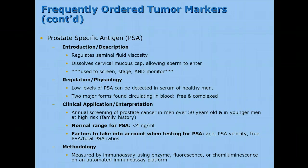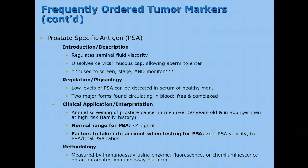Again, we use immunoassay for HCG. Next is PSA, prostate-specific antigen. It regulates seminal fluid viscosity and dissolves the cervical mucus cap, allowing sperm to enter through. This is one of the only tumor markers used to screen, stage, and monitor cancer. Most men over age 40 or 50 will get a blood draw for PSA every year at their physical to see if levels are remaining the same. The normal level is less than 4 nanograms per milliliter, and if it starts getting above that range, they'll begin checking with ultrasounds and other imaging, looking for tumors. We use immunoassay for this as well.